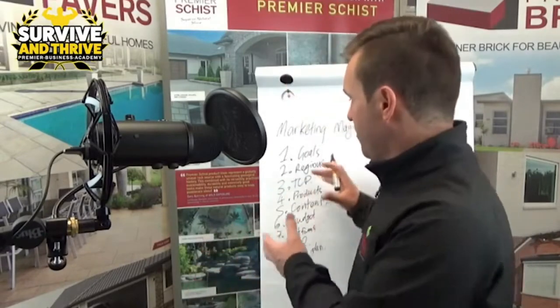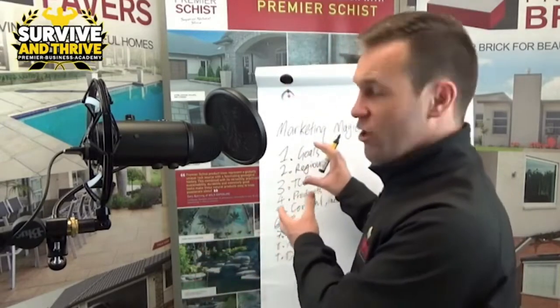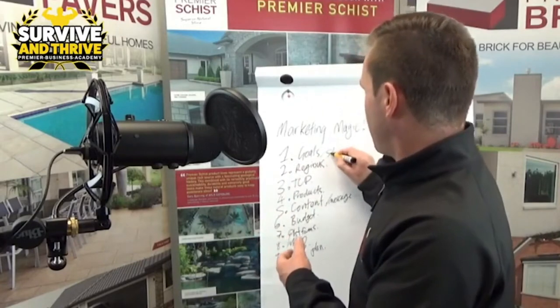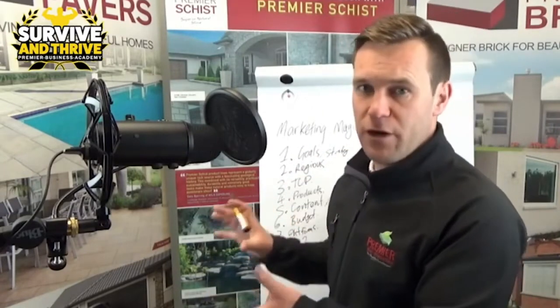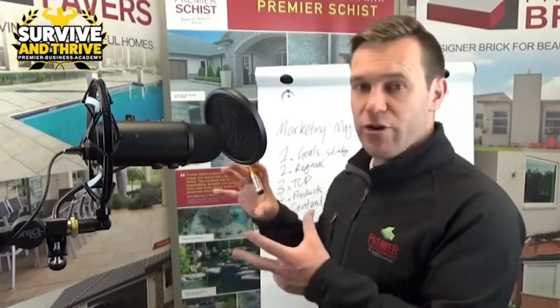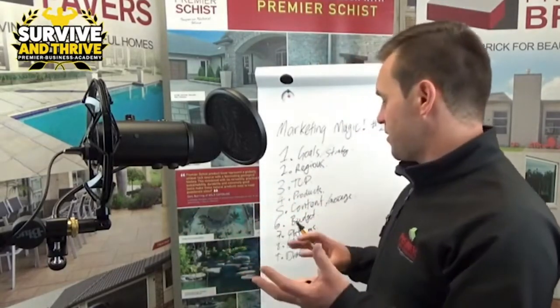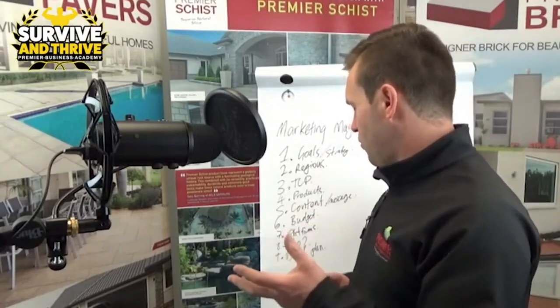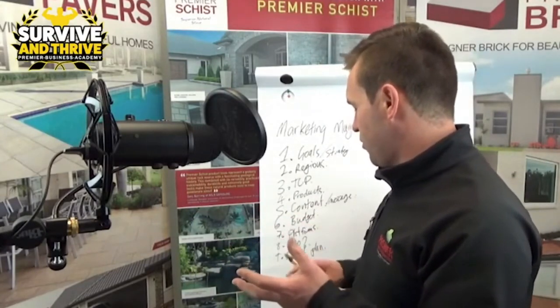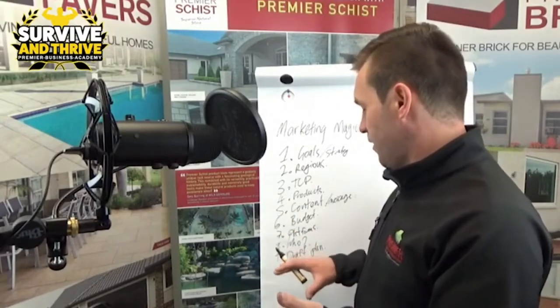Start putting all these elements into the plan and try to keep it simple — on one or two pages. We're big fans of using the SOAP method: Strategy on a Page. It might be an A3, that's fine. Group it into these things: what are our goals and marketing strategy — maybe three to six things — then our regions, our target customer profile, our products, our content, our messaging, our budget, our platforms, and who is in charge or who's the team.